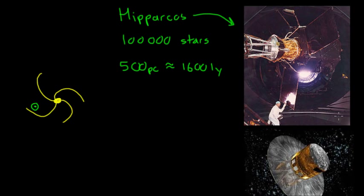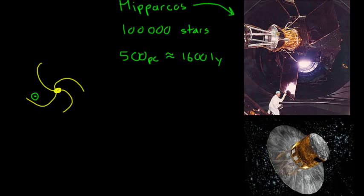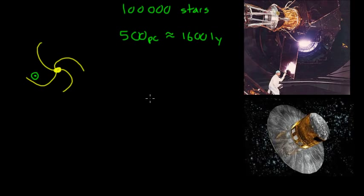Now currently, the European Space Agency is working on a new satellite called Gaia. And here's an artist kind of representation of this. And this is planned on being launched next year, in 2013.